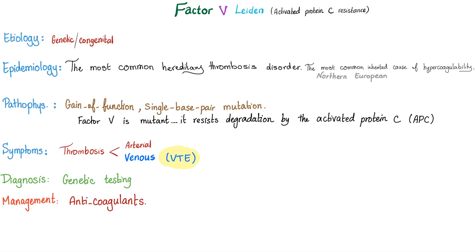This comes from Professor Bruce Nathan Ames from the University of California, Berkeley — one of the few hundred most cited scientists in all fields. Now, Factor V Leiden: it's a gain-of-function mutation, a single base pair mutation. Factor V is now mutant — it resists degradation by activated protein C, so it's always resisting the brakes. Symptoms: thrombosis, both arterial and venous, but mostly venous due to blood stasis — venous thromboembolism (VTE). Diagnosis: genetic testing. Management: anticoagulants, and you need a specialist.